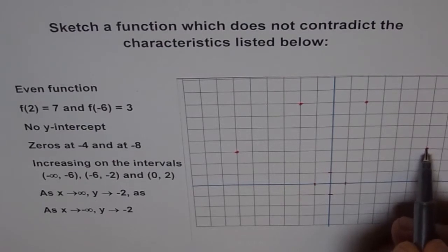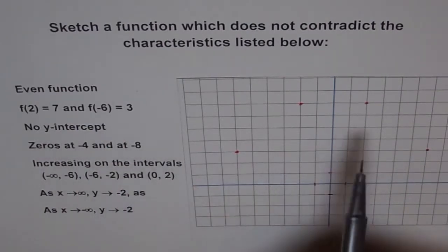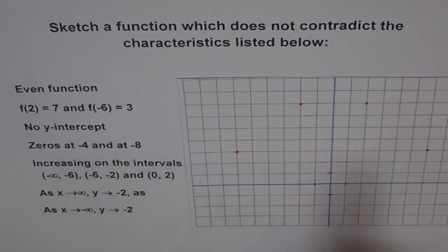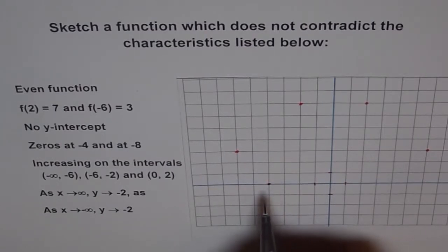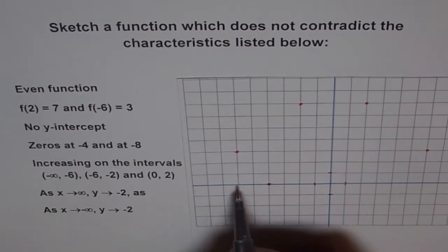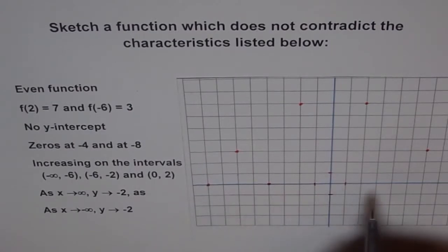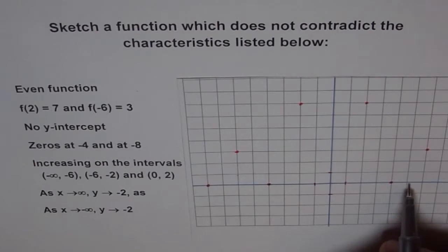No y-intercept means we are not going to cross the y-axis. Zeros at -4 and -8, so we mark those points on the x-axis. Since the function is even, we also have zeros at x = 4 and x = 8 by symmetry.